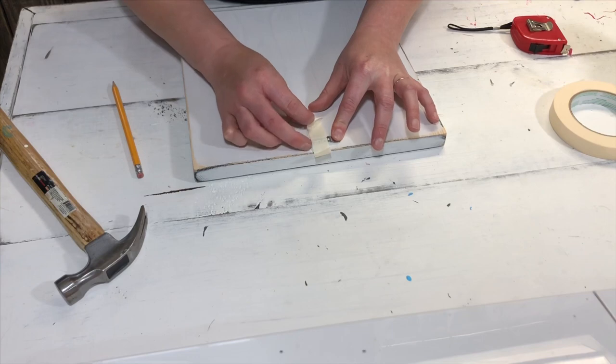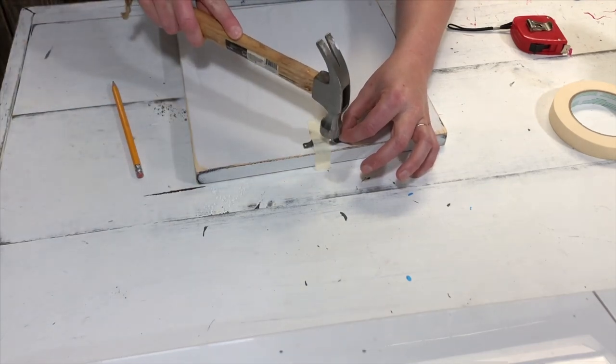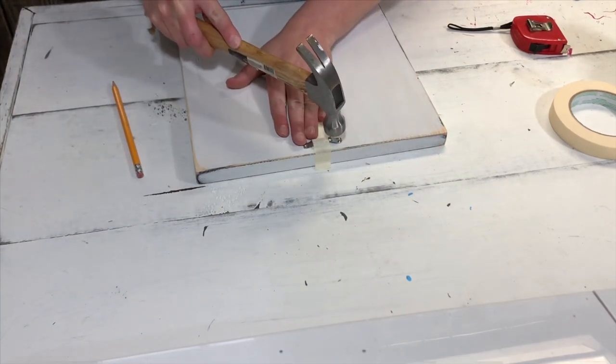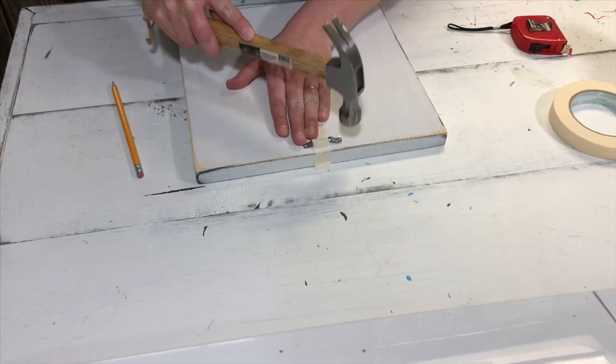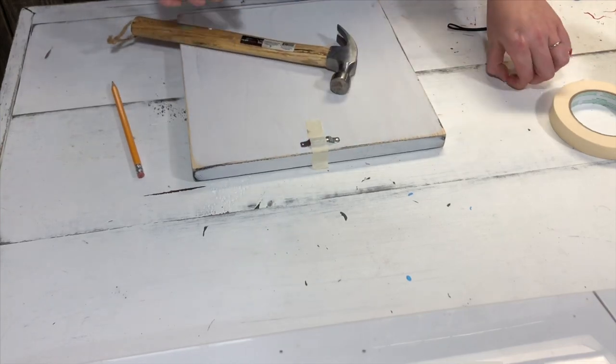Once you have that exactly where you want it, just take your little nails and a hammer and gently tap them into place. If you tap too hard you could risk accidentally slipping and hitting the sawtooth hanger and then it'll get bent and you'll have to do the whole thing all over again.